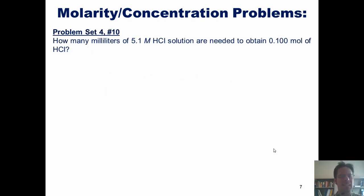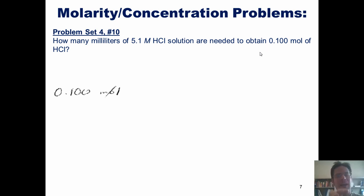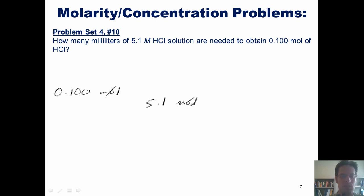Let's do our second problem: how many milliliters of 5.1 molar HCl solution are needed to obtain 0.1 moles of HCl? I'll start with the value I've been given that doesn't have denominator units. I also want to keep in mind where I'm trying to go — the final answer had better be milliliters. I'll place a set of parentheses to the right of this value. What units go in the denominator? Of course, I'm going to want to put moles in the denominator.